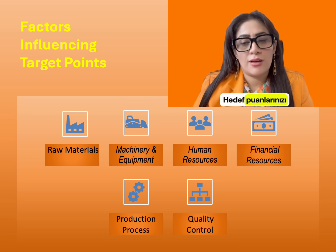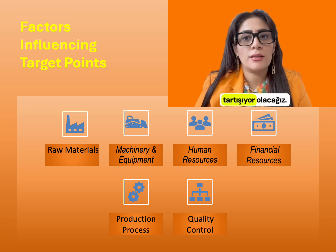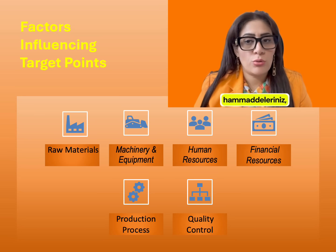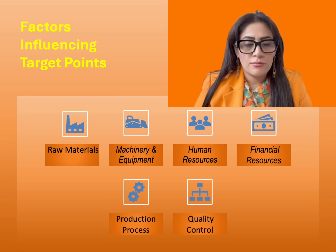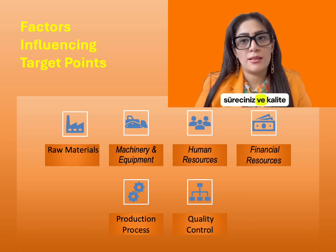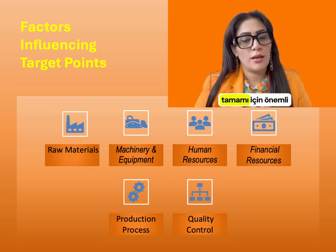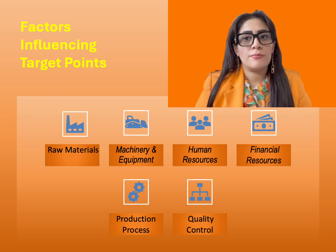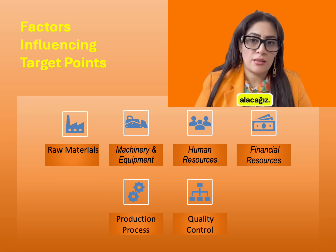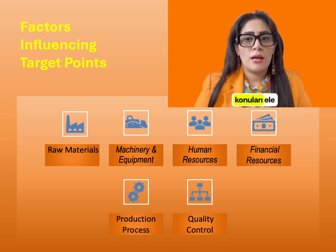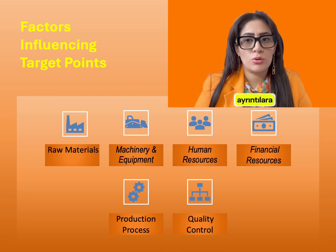I'm going to mention the factors that affect your target points, and we'll be discussing these factors during the regular weeks. These include your raw materials, your machinery and equipment, and your workforce — as well as your production process and your quality control. Since financial matters are important for almost all of these sections, we haven't considered it as a separate section. We'll discuss the rest of the sections in more detail starting next week, and today I'll explain what topics we'll cover in each section in a general way.